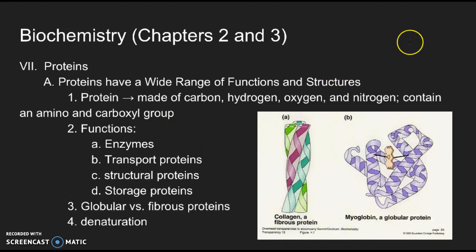Proteins are really the basic unit of tissues, all kinds of different biological structures, and they're super important. Proteins are made of carbon, hydrogen, oxygen, and nitrogen, and they often contain an amino and a carboxyl group. They can function as enzymes, transport proteins, structural proteins, and storage proteins, all of which we'll get to later.